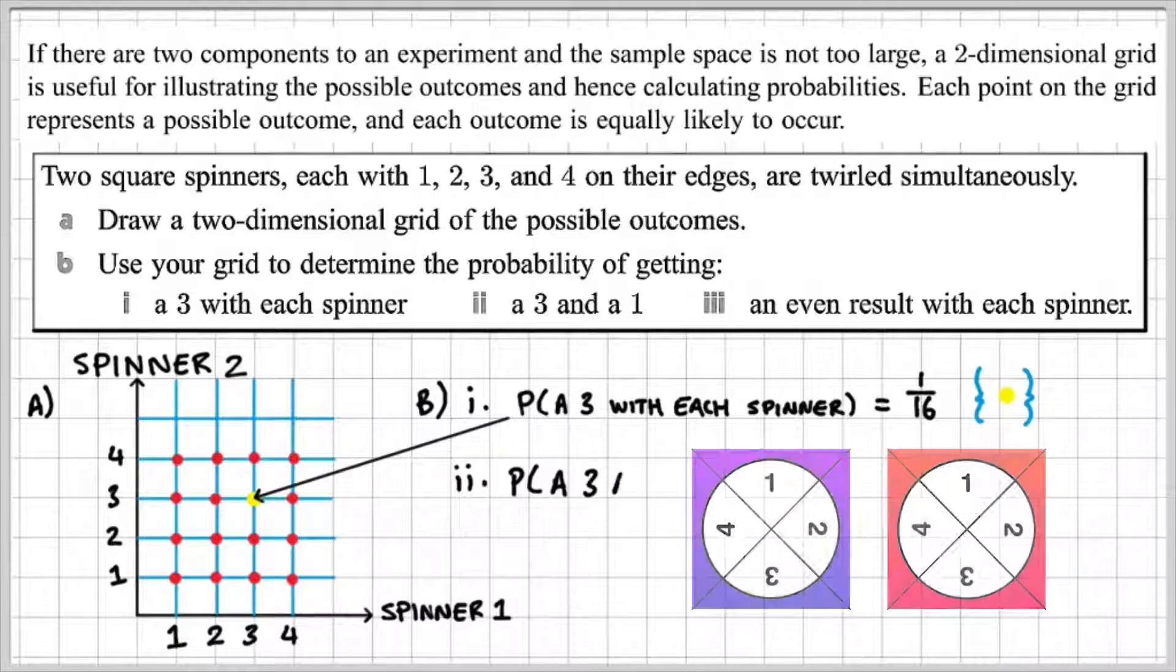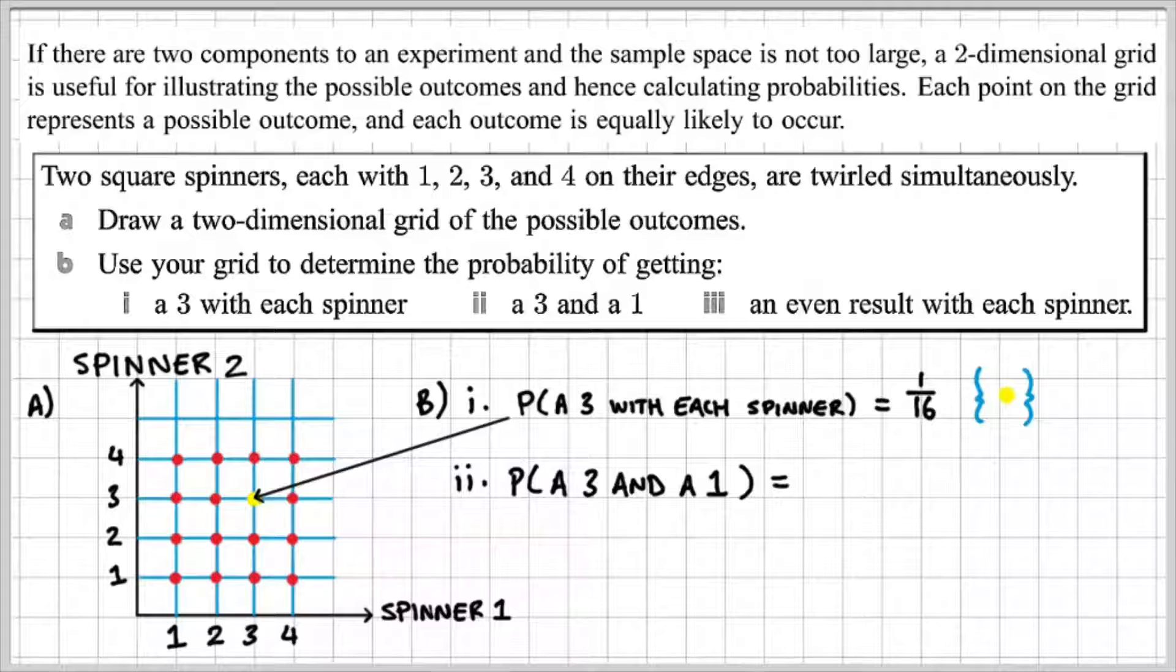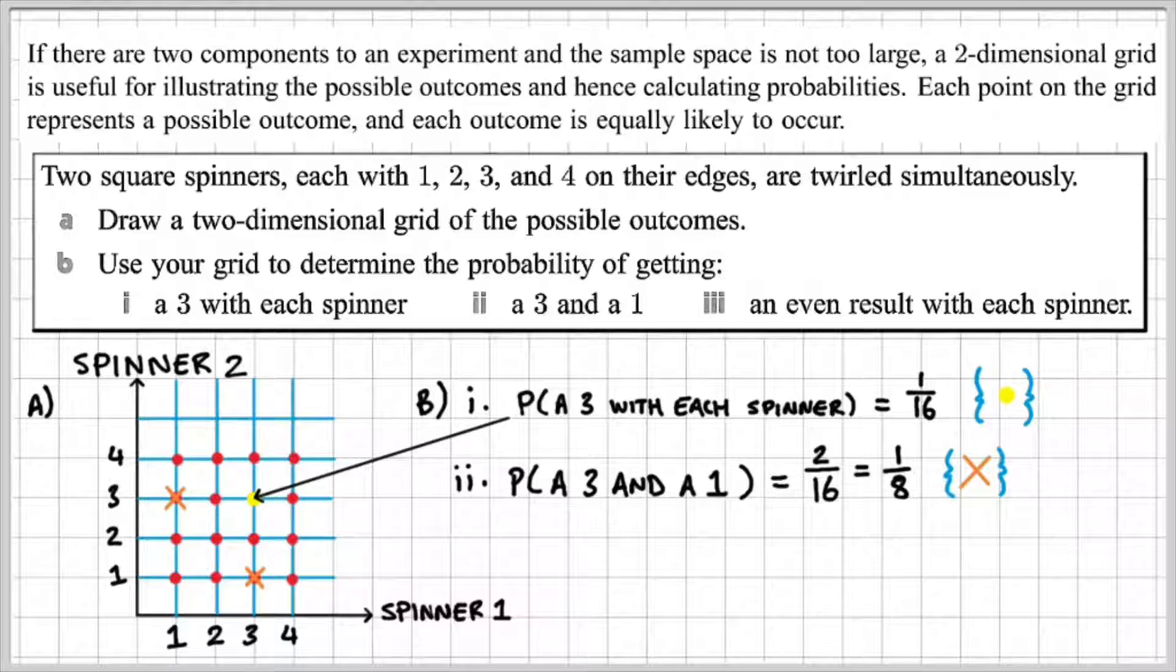Part ii) is the probability of getting a 3 and a 1. So that is 2 out of 16 or 1 over 8, and that's indicated by my orange cross.